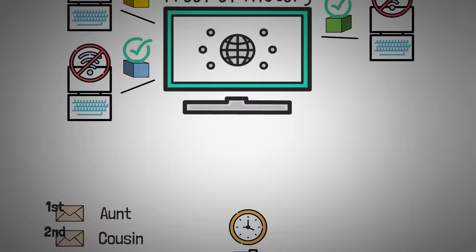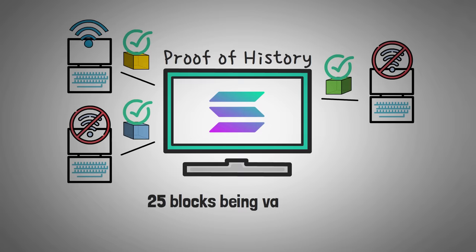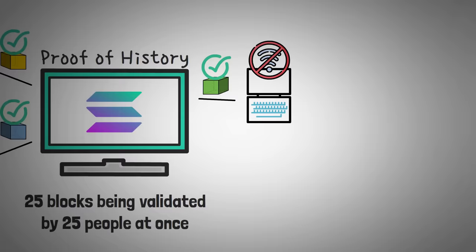Another interesting thing is that Solana has like 25 blocks being validated by 25 people at once. This is how they're actually able to surpass Visa by such a large factor.